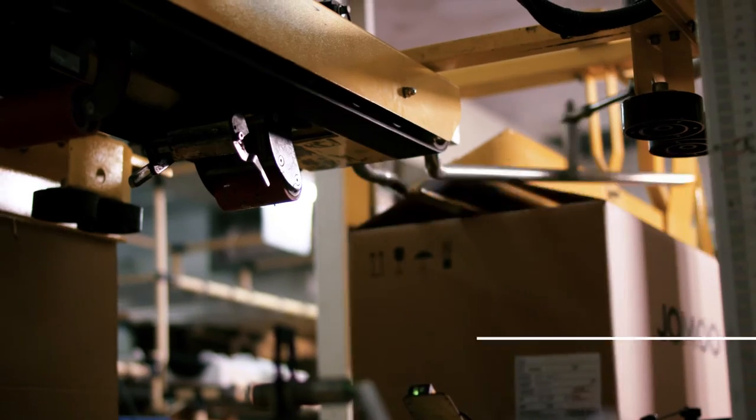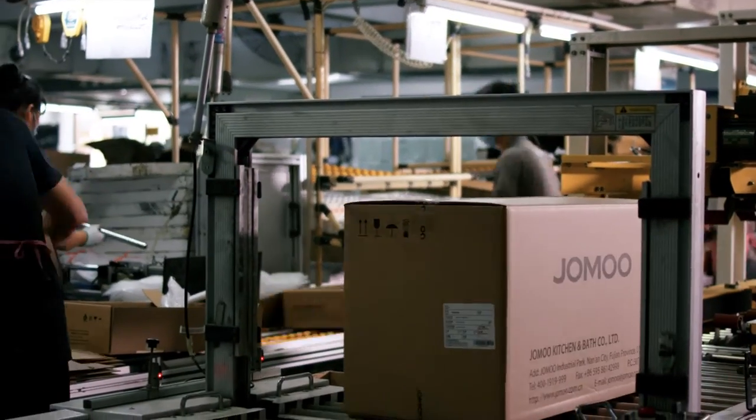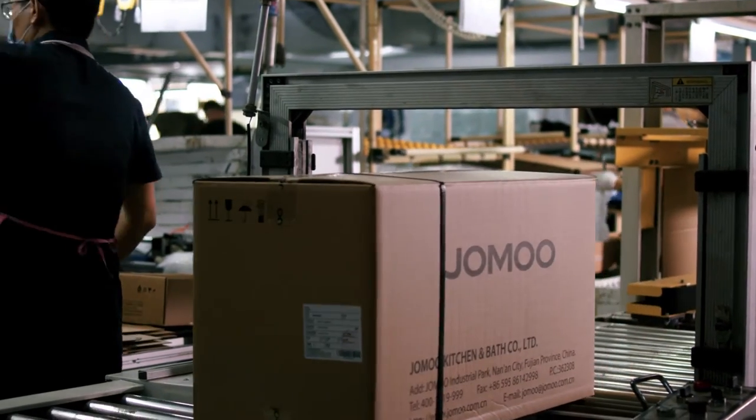After testing, the seats are dried. Robots move the toilets down to the packaging line. Robots perform all the heavy tasks to ensure the workers' safety.